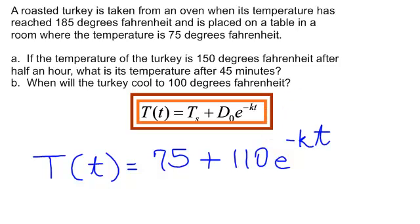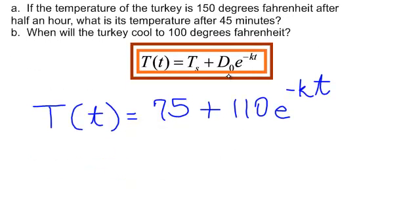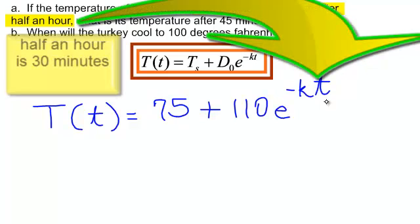I know a little bit more information here. I know that 30 minutes after I take that turkey out of the oven, instead of being 185 degrees, I know my turkey has cooled down to 150, so I'm going to plug in 30 for t. That's 30 minutes and 150 degrees for my turkey.